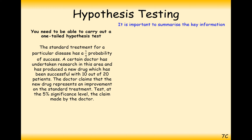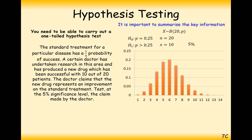For the next question, key information: we have a binomial distribution — patients are either successfully treated or not. We have 20 patients, null hypothesis P = 0.25, and the alternative hypothesis H1: P > 0.25 (the treatment has improved). We have 20 trials, a test statistic of 10, and we're testing at the 5% significance level. We check whether the tail P(X ≥ 10) is less than 5%.